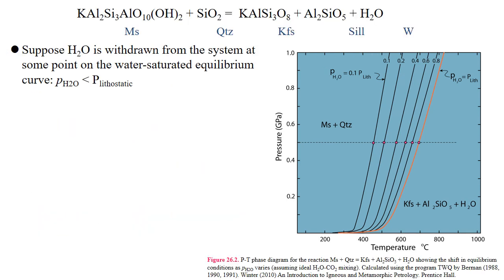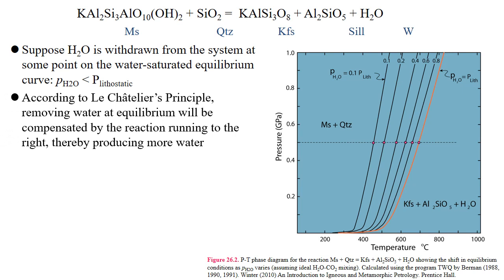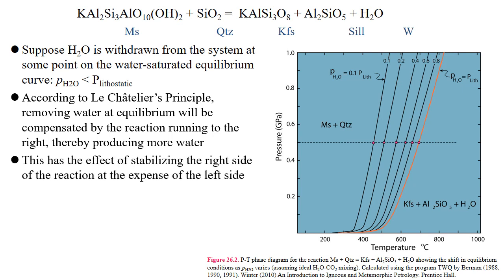Suppose water is withdrawn from the system at some point on the water saturated equilibrium curve, where the partial pressure of the fluid, or water in this case, is less than the lithostatic pressure. According to Le Chatelier's principle, removing water at equilibrium will be compensated by the reaction running to the right, thereby producing more water to compensate for the loss. This has the effect of stabilizing the right side of the reaction at the expense of the left side.